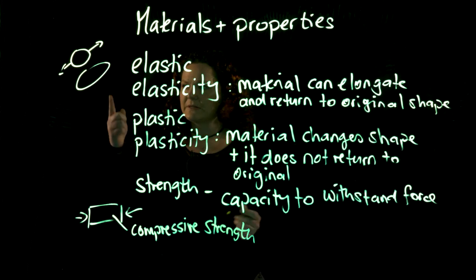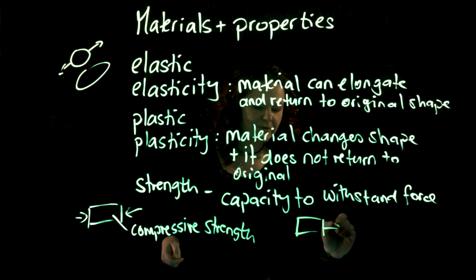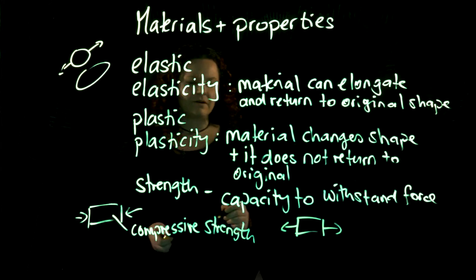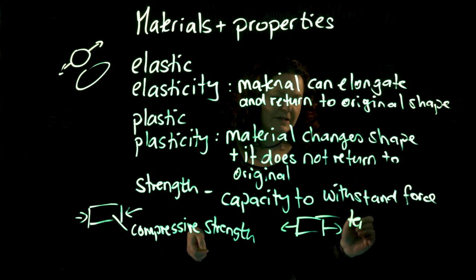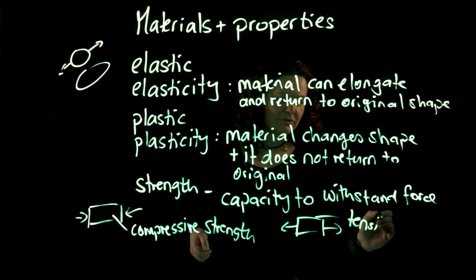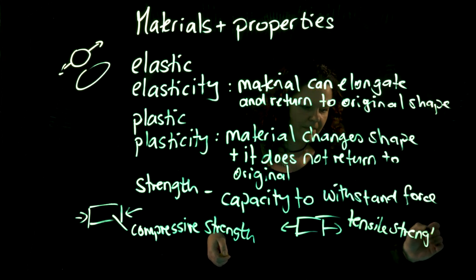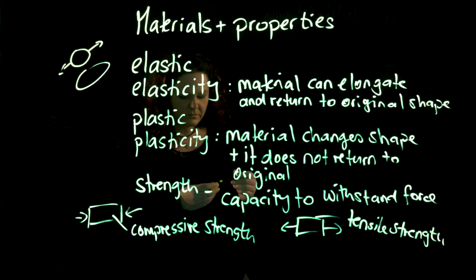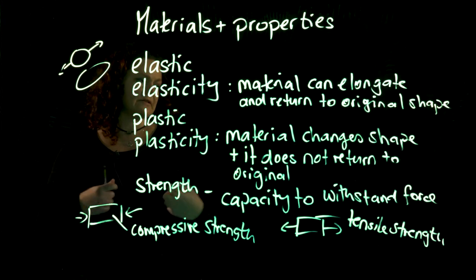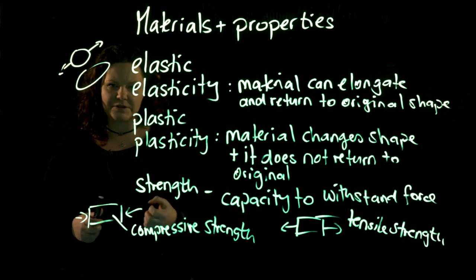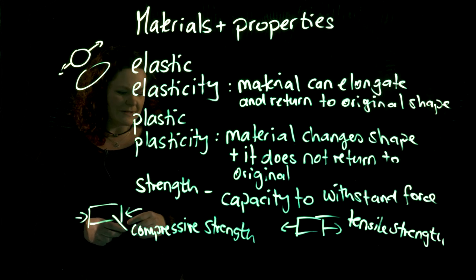We also have the opposite, as illustrated here. We have a tension on a material that wants to elongate the material, and we have the tensile strength. Just like compressive strength, it's the ability of a material to resist the force that comes from outside.